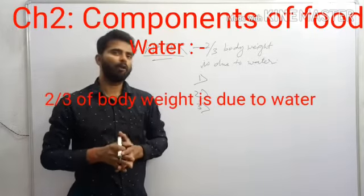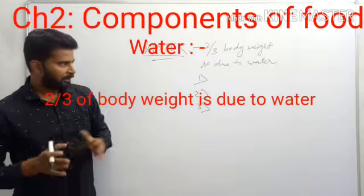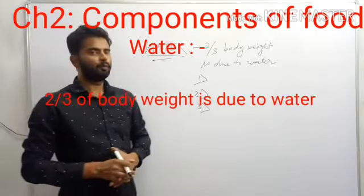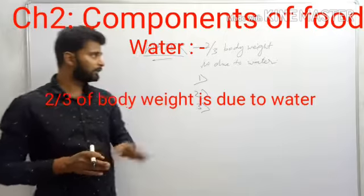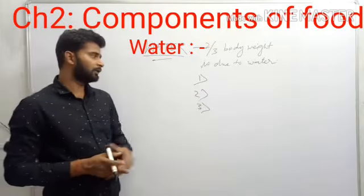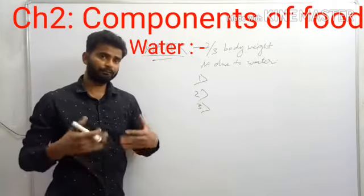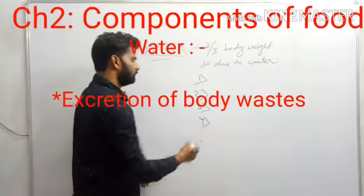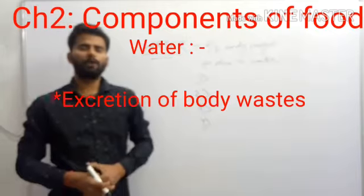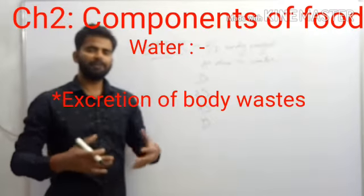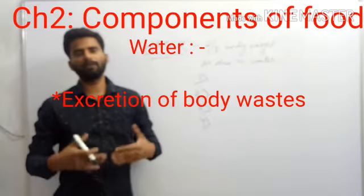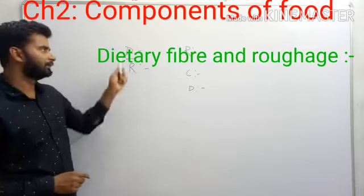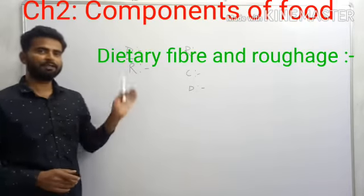Water is also present in our blood, and it is needed for blood circulation. Also, a large part of our body weight is due to water. So water is essential for maintaining temperature, transporting nutrients, circulating blood, and the fourth function — excretion of body waste.